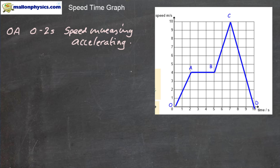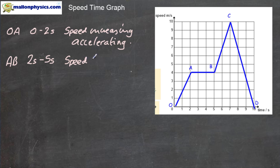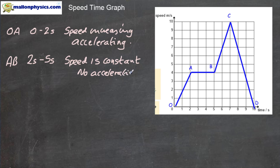The next part of the graph is a plateau-shaped section from A to B, covering from two seconds to five seconds. In this case, the speed is not increasing — the speed is staying constant. It's not changing. If the speed is constant and not changing, we can say there is no acceleration. No acceleration occurs when the speed stays the same.